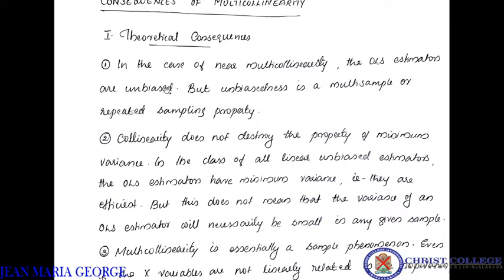These estimators are unbiased — that is the biasness property of our model. But unbiasedness is a multi-sample, repeated sampling property. Unbiased estimators may appear biased in a single sample, meaning we are not always achieving the best linear unbiased estimator. This unbiased property is a repeated-sampling property, and in a single sample, that unbiased property may not be available.